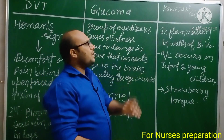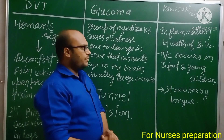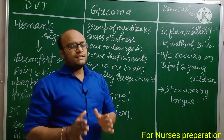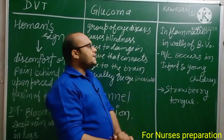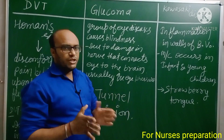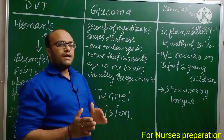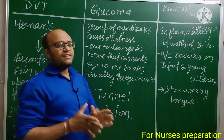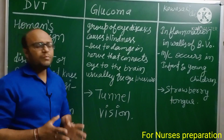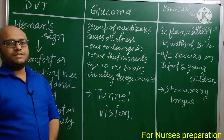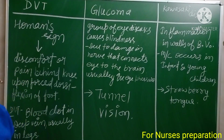Kawasaki disease is a condition in which inflammation of the walls of blood vessels occurs. It most commonly affects infants — those below one year — and young children. Strawberry tongue is an important feature of Kawasaki disease. If an examiner asks which disease is associated with strawberry tongue, the answer is Kawasaki disease.